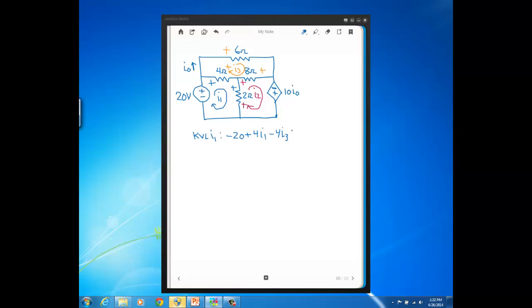And then for the 2 ohm resistor I'll get a plus 2 I1 minus 2 I2, and that sums to zero. So that's KVL for I1.